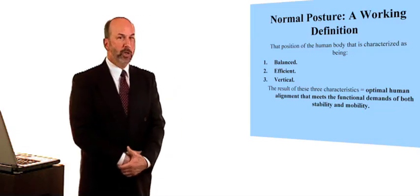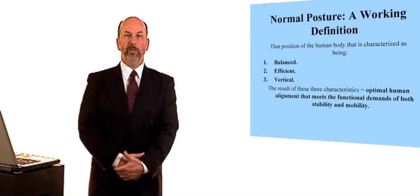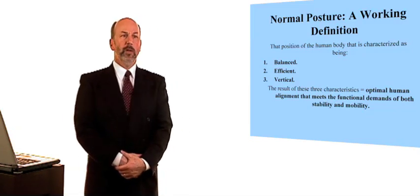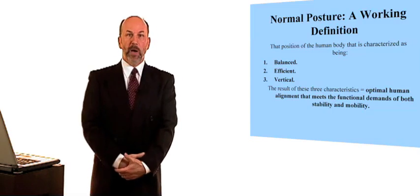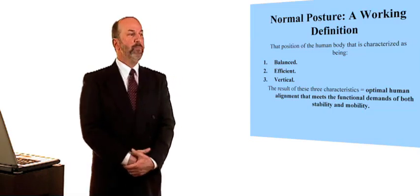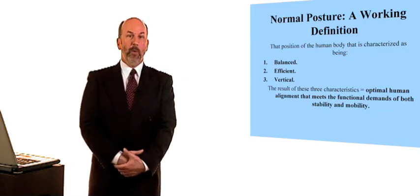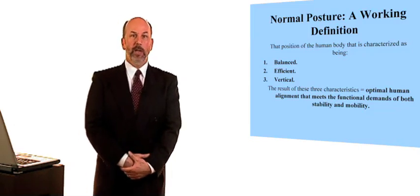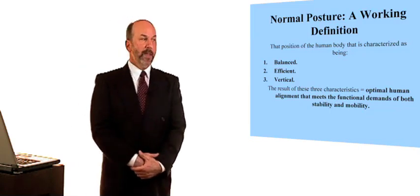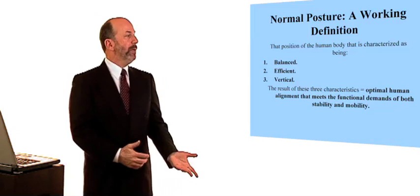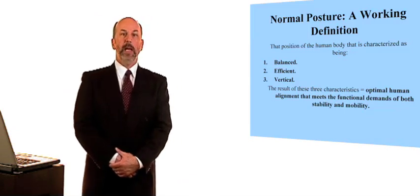What is a good working definition and understanding of posture? I think it comes down to three basic components. One is that this alignment, this posture is balanced. Secondly, that this alignment is efficient. And thirdly, that it is vertical. And when we have these three components, that it is balanced, efficient, and vertical, then we have an ideal human alignment that meets the functional demands of both stability and mobility.